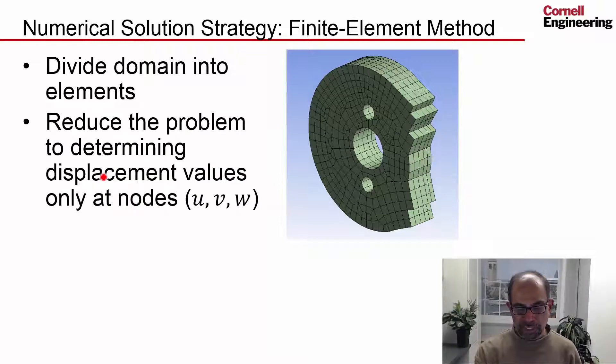You reduce the problem to determining displacement values only at the nodes. The nodes are not only the corners but also the mid-sides, the mid-side nodes. It's difficult to draw here, but ANSYS is going to determine the displacements not only at the corners but also at the mid-sides to get the higher order polynomial interpolation.